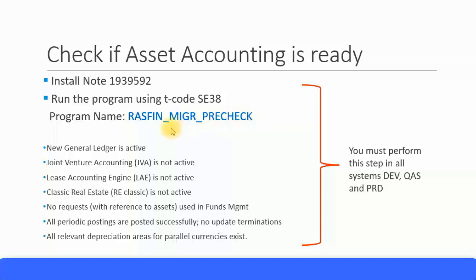Once you execute this transaction, it will do all the checks: new GL should be active, JVA is not active, lease accounting engine is not active, classic real estate is not active, there are no requests with regard to assets for funds management, all periodic postings are posted successfully, and all relevant depletion areas for parallel currencies exist.